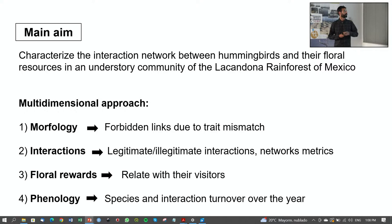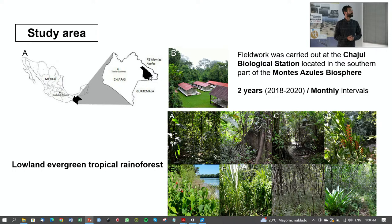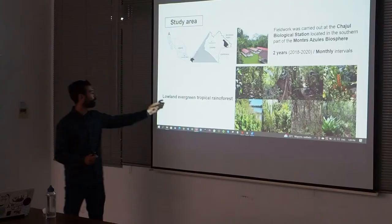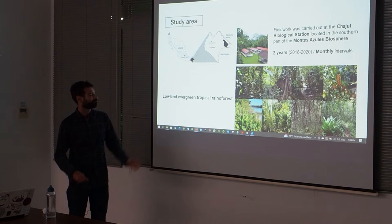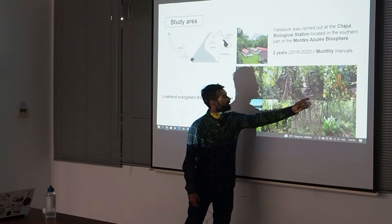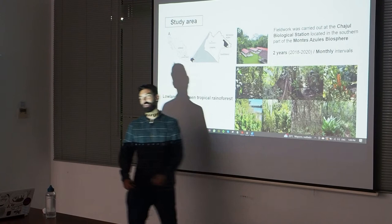The study area was the Chajul Biological Station, located in the southern part of the Montes Azules Biosphere in Mexico, very close to the Guatemalan border — only five kilometers away. I carried out fieldwork over two years at monthly intervals, almost 50 days per month. The main habitat was lowland evergreen tropical rainforest, but it's a mosaic of different habitats, including floodplains, rivers and streams, acaguales — areas with secondary growth — and also savanna-like vegetation.